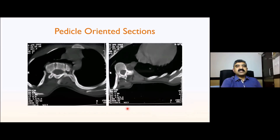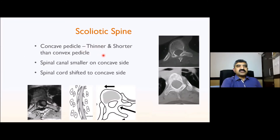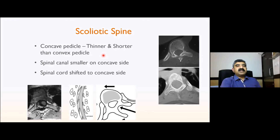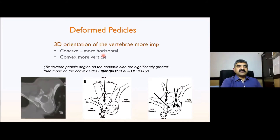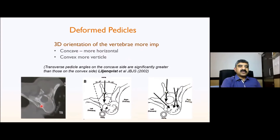When doing a CT scan, ask for pedicle-oriented sections so you can properly visualize the pedicles. In the scoliotic spine, the pedicle is thinner and shorter on the concave side than the convex side. The spinal canal diameter is also smaller on the concave side, and the spinal cord is shifted to the concave side. Be very careful not to insert a screw into the canal on the concave side. Concave side requires a more horizontal screw placement; convex side requires a more vertical placement.